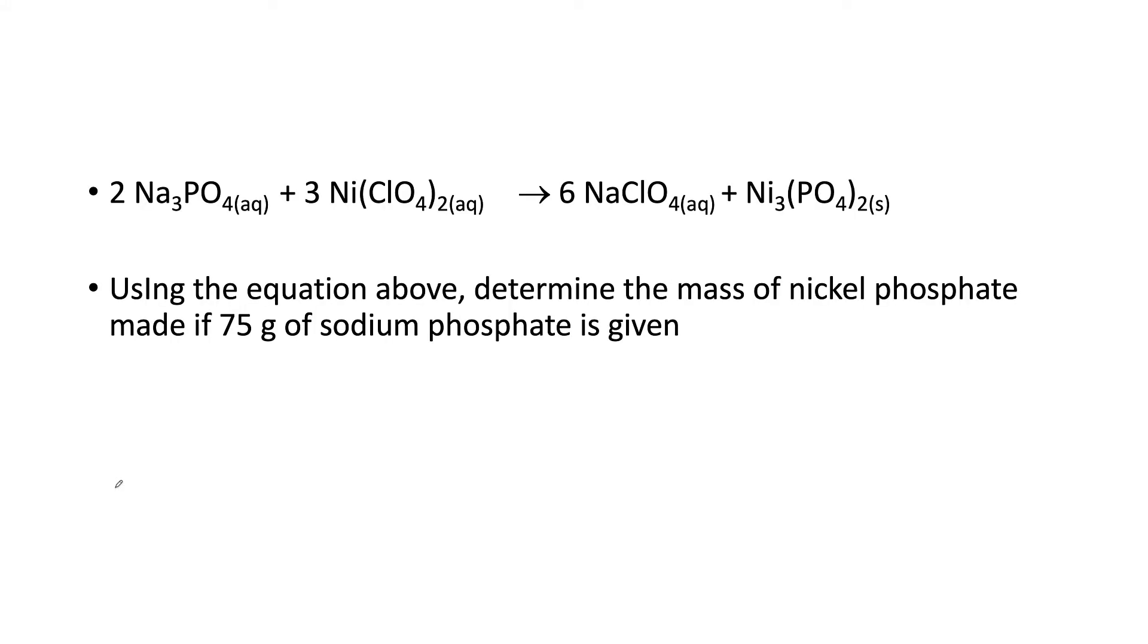So you're given a balanced equation, and we have sodium phosphate plus nickel perchlorate, and we end up with sodium perchlorate and nickel phosphate. With this equation above, we want the mass of nickel phosphate, so we're looking for the mass of this guy if we have 75 grams of this guy. Now, we're assuming, and it's safe to assume if you don't have any other information, this is in excess. And next week we'll describe what happens when we don't have a lot of this. We've got two products, and we're going to figure out how much nickel phosphate we have. You've got the balanced equation.